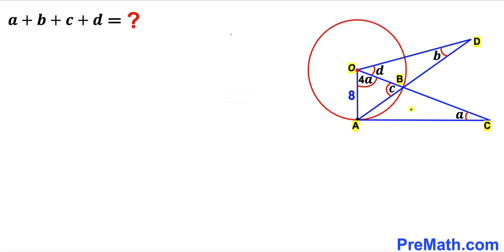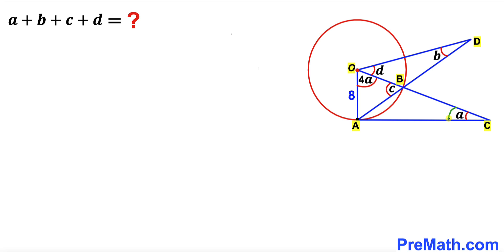Welcome to Pre-Math. In this video we have two triangles OAC and OAD and a circle with center O, such that OA is the radius of this circle and it is eight units, whereas segment AC is tangent to this circle. This angle is A, this angle is B, this angle is C, this angle is D, and this angle is four times A. Point B is on the circle, and our task is to calculate the angles A plus B plus C plus D.